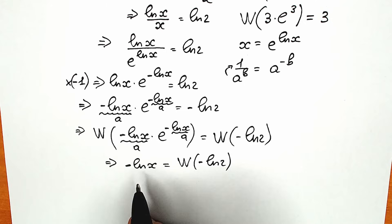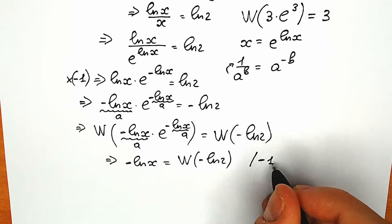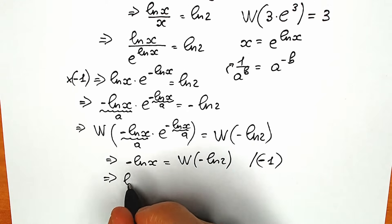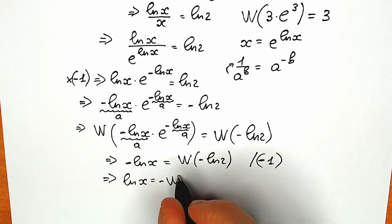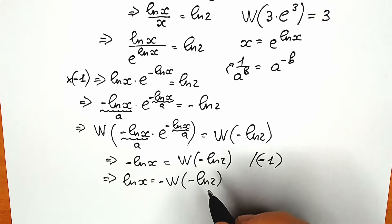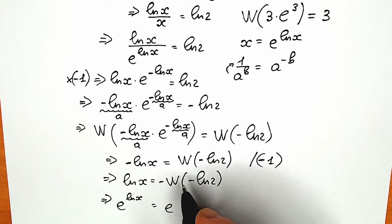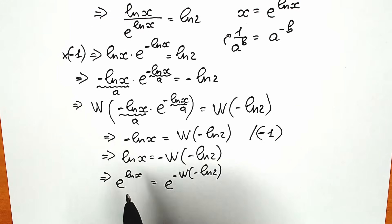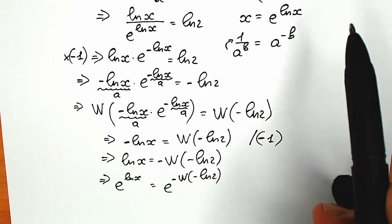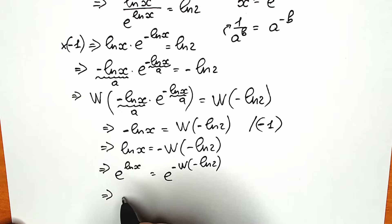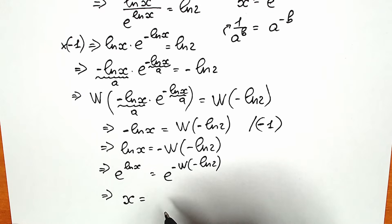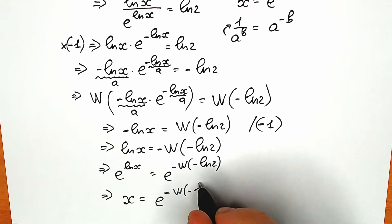Now the final step — let's find x. We have minus natural log x, so multiply both sides by minus 1: natural log x equal to minus W of minus natural log 2. To isolate x, we exponentiate both sides with base e. Since e to the power natural log x equals x, we get: x equal to e to the power minus W of minus natural log 2, which can also be written as x equal to 1 over e to the power W of minus natural log 2.